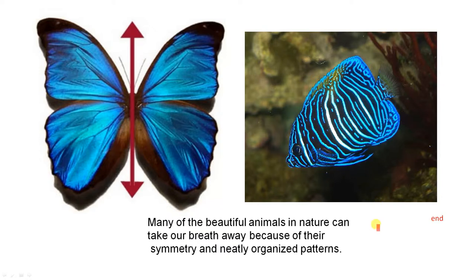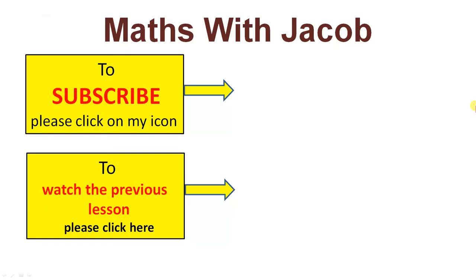Many of the beautiful animals in nature can take our breath away because of their symmetry and neatly organised patterns. Here are two absolutely beautiful examples: the butterfly and this special fish. This video has just presented a few examples of patterns in nature, and we can see the beauty involved. There are millions of others.